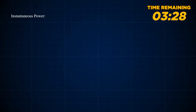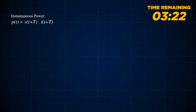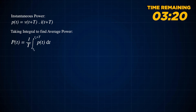Let's take an extensive look at how the equation of average power is derived. Since both voltage and current are periodic in an AC circuit, they can be represented as V(T + T) and I(T + T). Taking the integral of the instantaneous power over one period and dividing by T to find the average power, this is the equation we get.